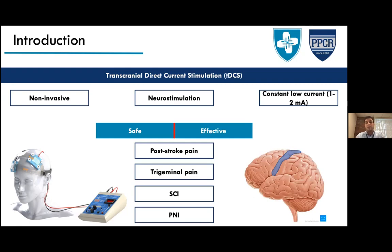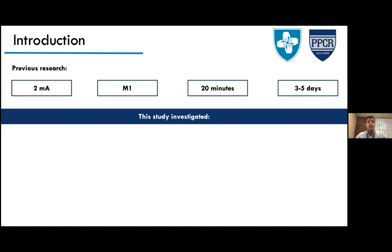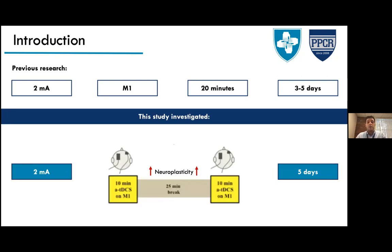The tDCS protocol is critical because it defines the dosage. Previous research used 2 milliamperes at the M1 area for about 20 minutes over three to five days for MS patients with neuropathic pain. The novelty of this study is a different protocol: they apply tDCS for 10 minutes, take a 25-minute break, then apply it again for 10 minutes. This break is believed to increase neuroplasticity and the long-term effects of tDCS.